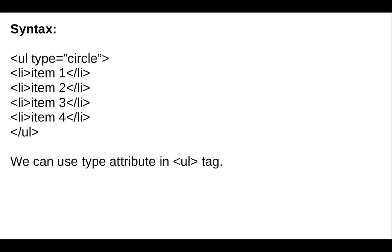The syntax is: first open the ul tag — ul stands for unordered list — then use the type attribute with a value such as 'circle'. You can change this value to 'square' or 'disc'. Add one or more list items inside the list tag, then close the ul tag. We can use the type attribute in the ul tag.